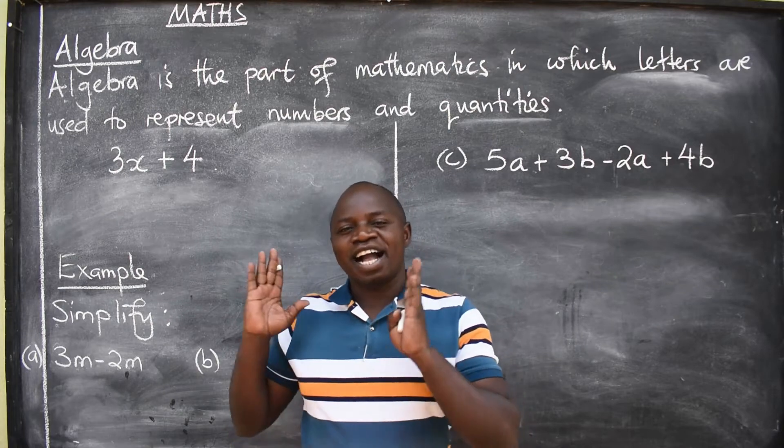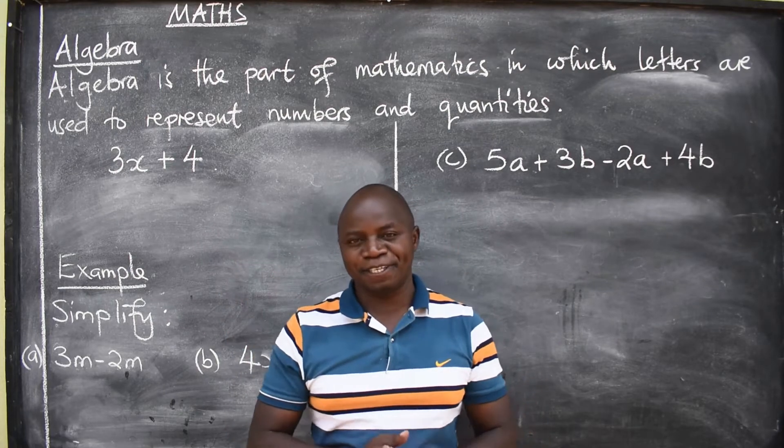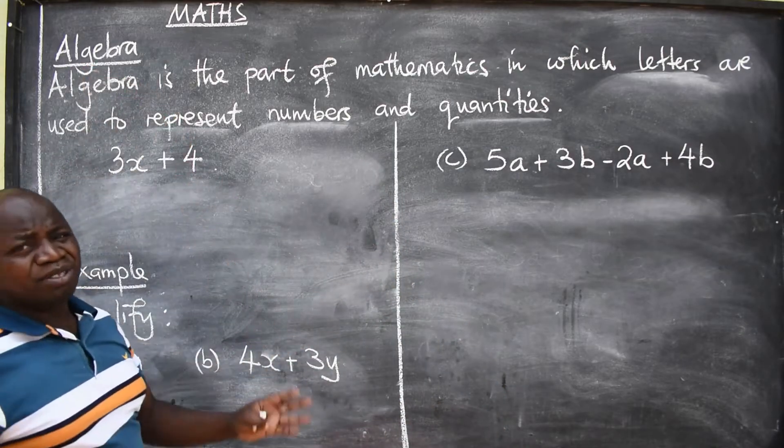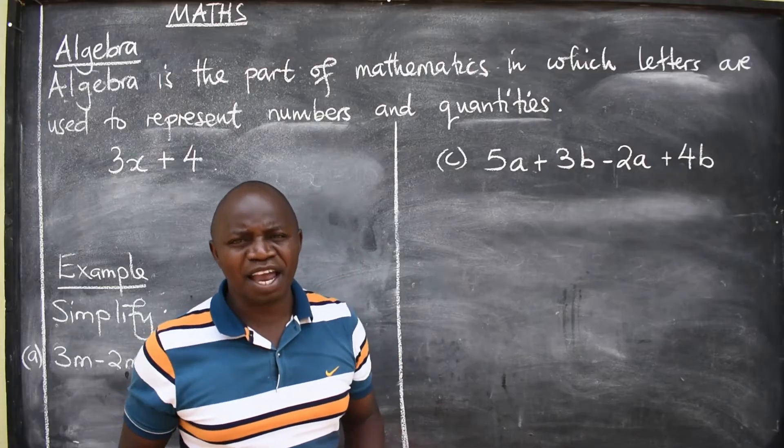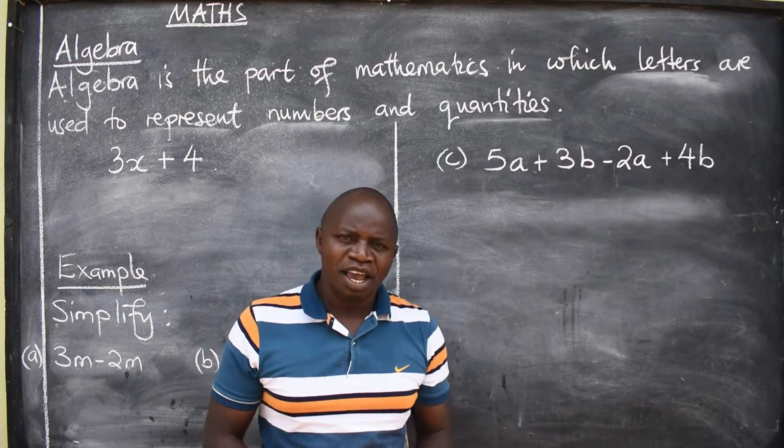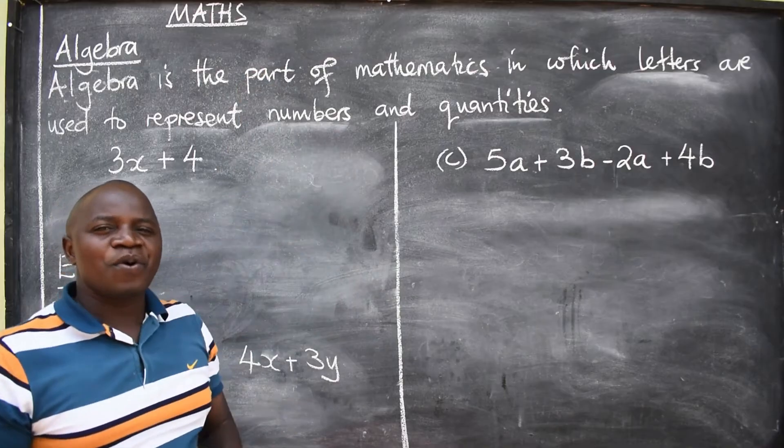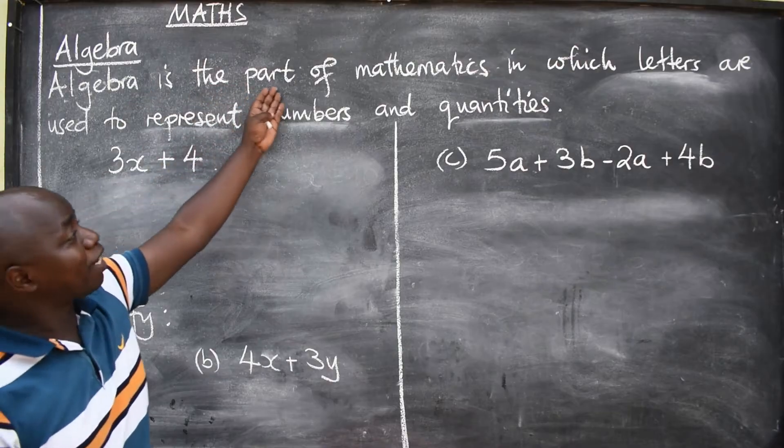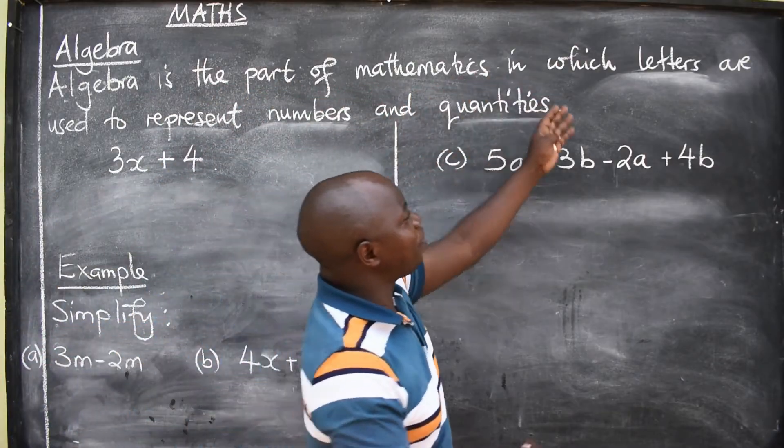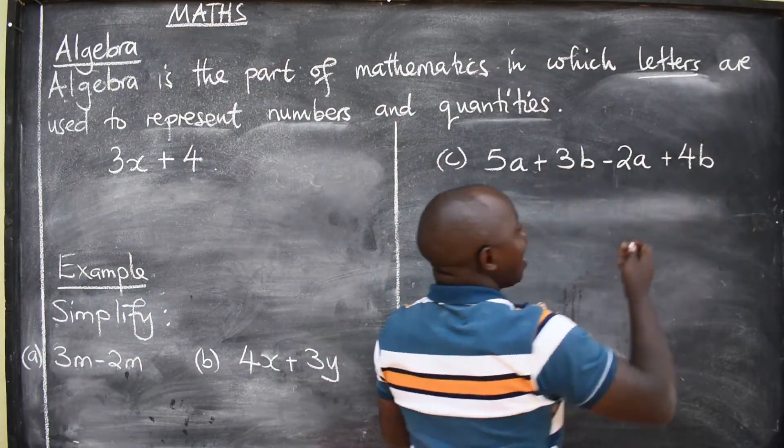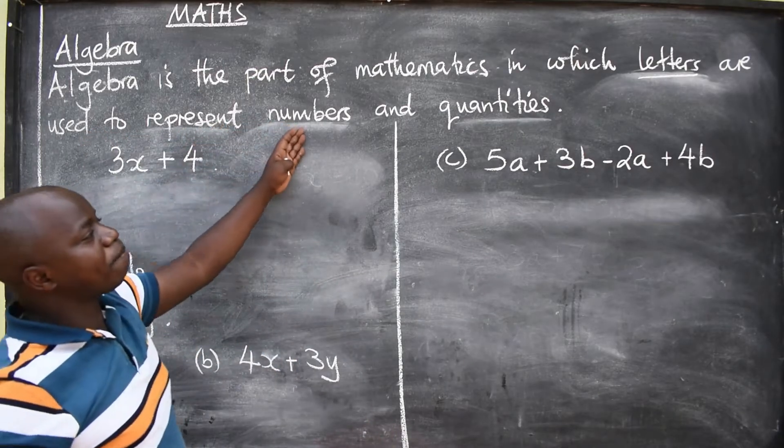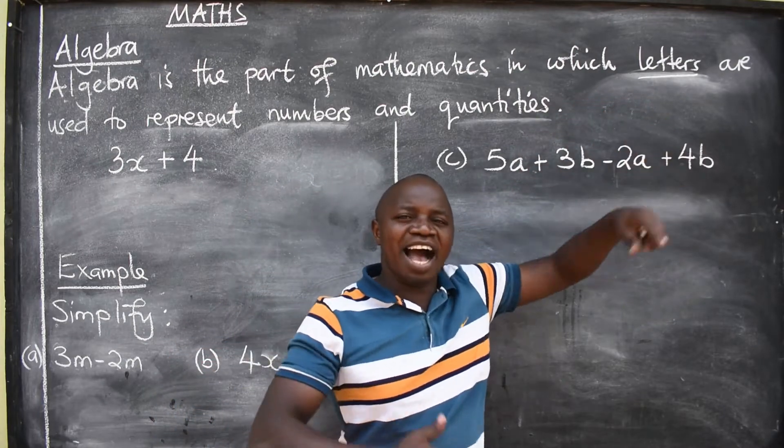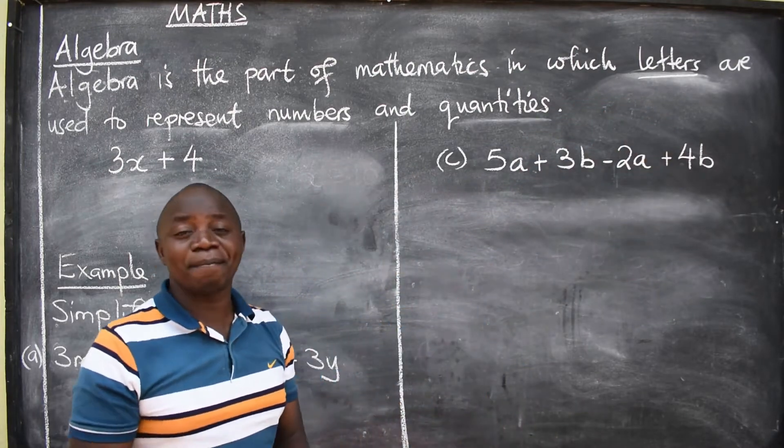This comes in all the papers in mathematics. Algebra can be defined in so many ways but I thought this definition here will be very easy for you to understand. Algebra is the part of mathematics in which letters are used to represent numbers and quantities. Letters are used to represent numbers and quantities.